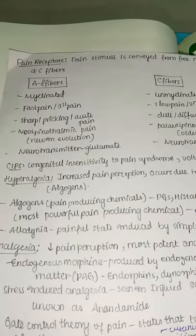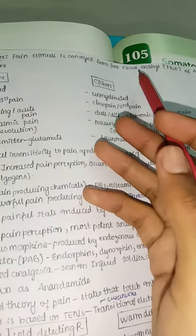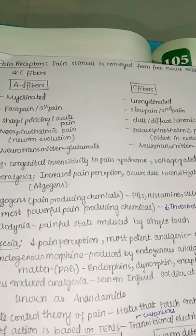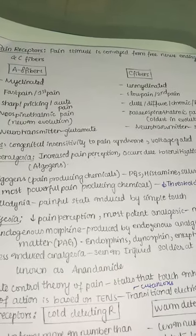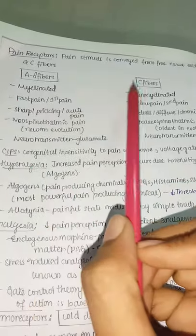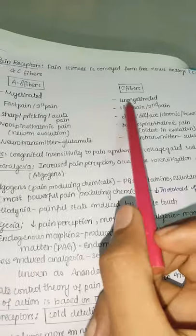Pain receptors convey pain via free nerve endings of A-delta fibers and C fibers. A-delta fibers are myelinated, while C fibers are unmyelinated.